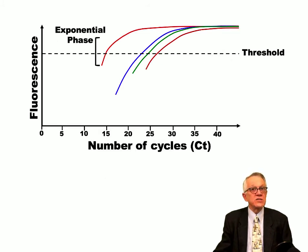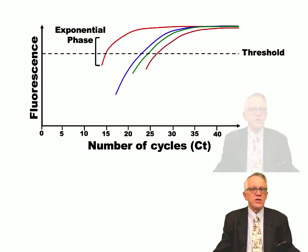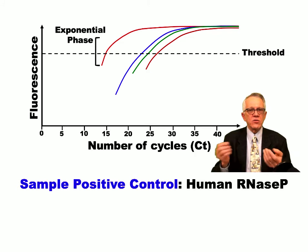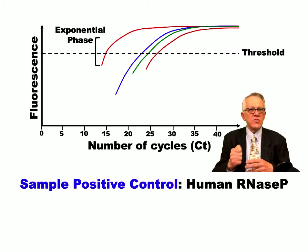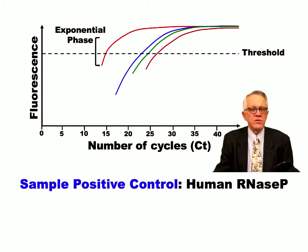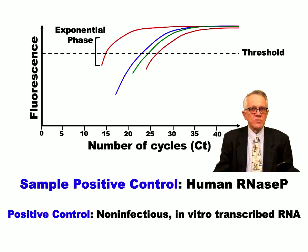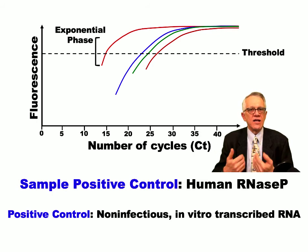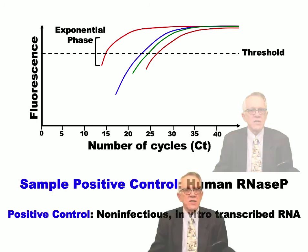CDC determined that the threshold is 40 cycles — for N1, N2, and also for a control. The control they use is a human RNA RNase P. RNase P is an RNA and also an enzyme, commonly found anywhere in the body. If we collect the sample and detect RNase P, we can check the quality of the sample. They also use a positive control to verify the quality of the reagents and the lab itself. We use a non-infectious form of SARS-CoV-2 to determine if the level of detection is appropriate in the lab setting.